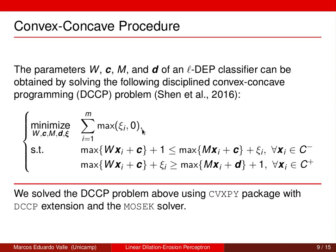That is, a negative sample is correctly classified and a positive sample is correctly classified when their slack is non-positive. We solve the DCCP program using the CVXPY package from Python with the DCCP extension and the MOSEK solver.